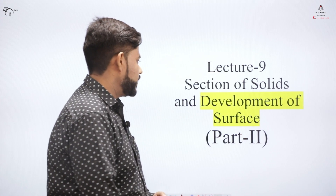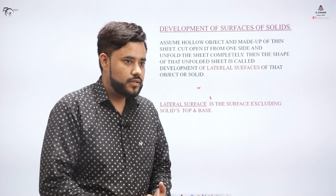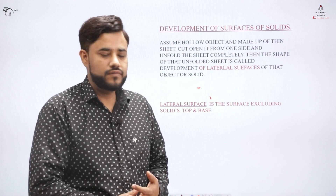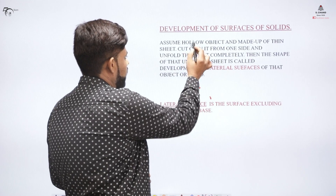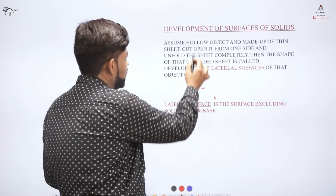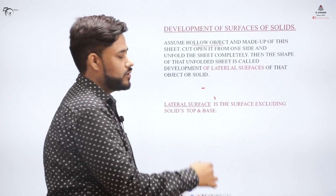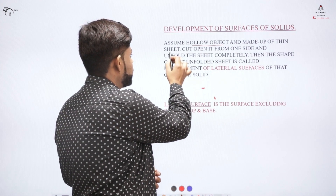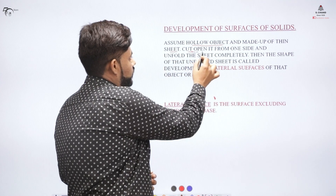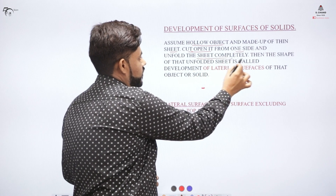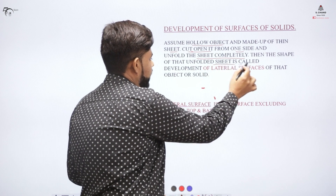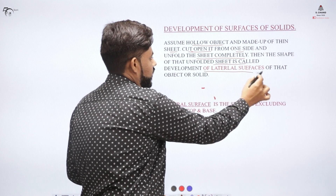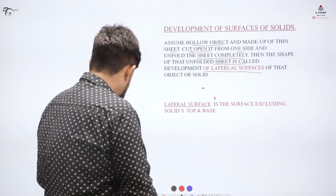Let us first understand what is meant by the development of a surface. We assume there is a hollow object made of a thin sheet. Cut it open from one side and unfold the sheet completely — the shape of that unfolded sheet is called the development of the lateral surfaces of the object.